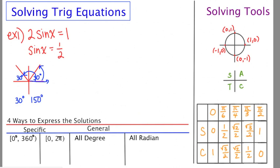So the next issue we face is how to express these answers. And there's four different ways, actually. One way might say find all the answers between 0 and 360, in which case we'd be done. The answers would be 30 and 150. We'd write those and we'd be done. Those are the specific answers on that interval.